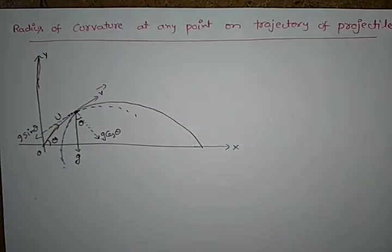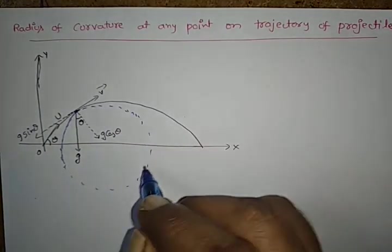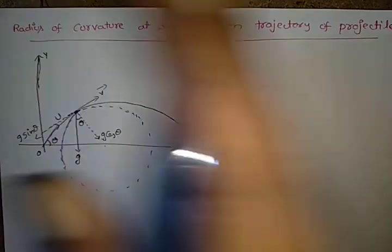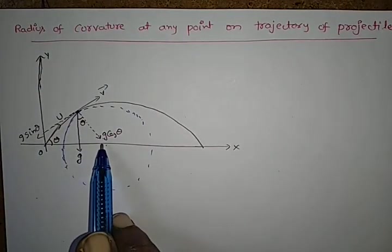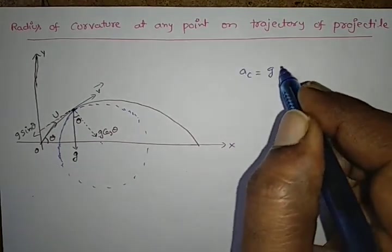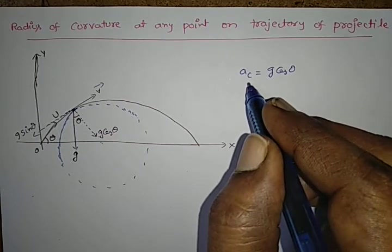Here g cos theta is acting towards the center of this circle, so it provides the necessary centripetal acceleration. So a_c is equal to g cos theta.